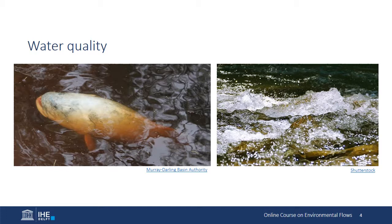Flow influences water quality in many ways. The benefits of higher flows to dilute and flush contaminants in rivers is well known, although runoff associated with high flows may also wash contaminants into the river. Among the most serious flow-related water quality issues is dissolved oxygen. Low and sluggish flows create conditions for low oxygen levels, while higher and more turbulent flows promote aeration. Initial high flow pulses, however, may re-suspend large quantities of organic matter that can cause brief but harmful hypoxic or anoxic events.